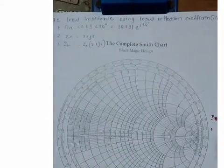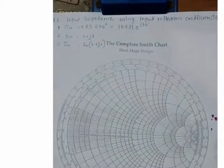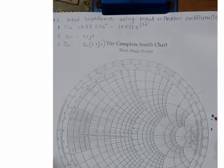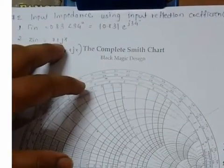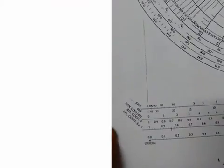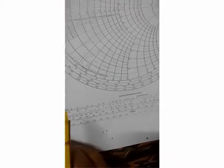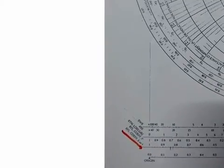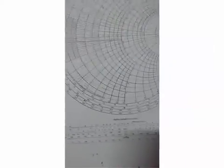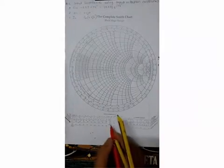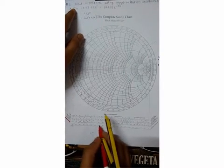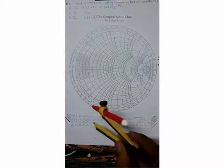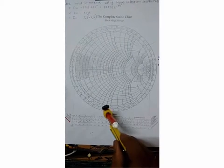First, we have given this 0.83 value. You can see here the reflection coefficient. We have to find this point on this line, so the first step is to find this point.